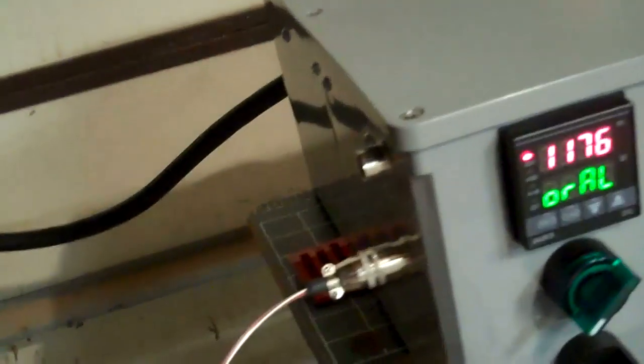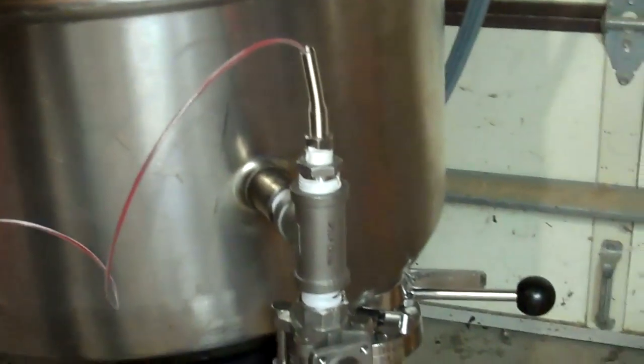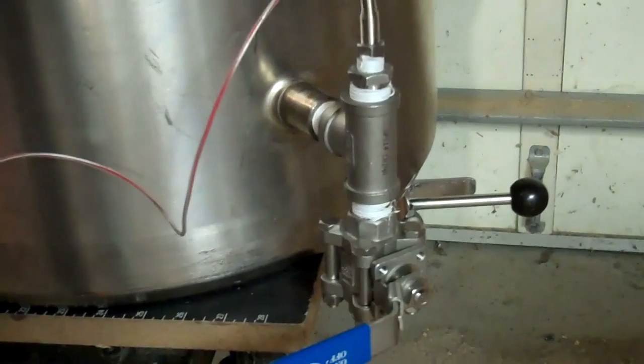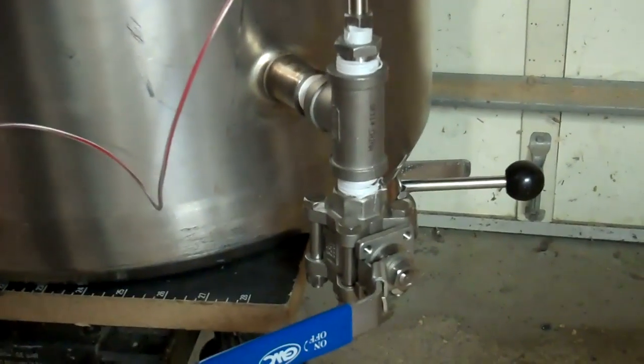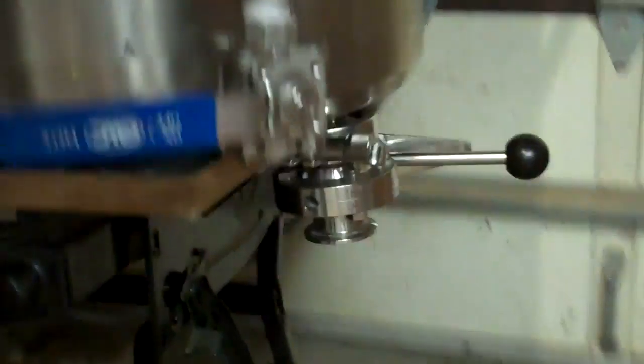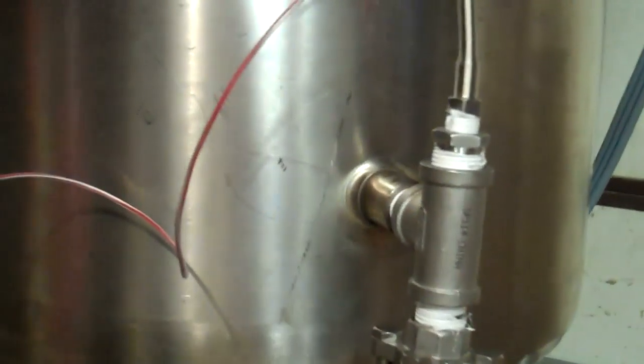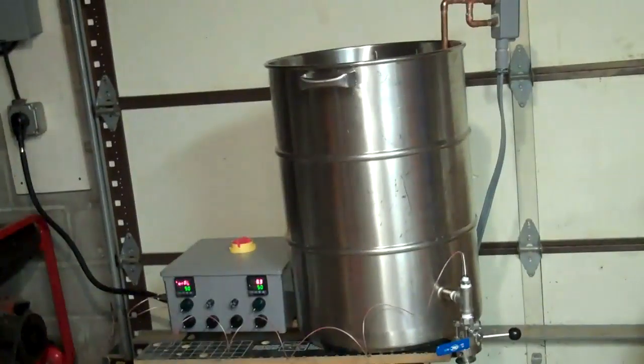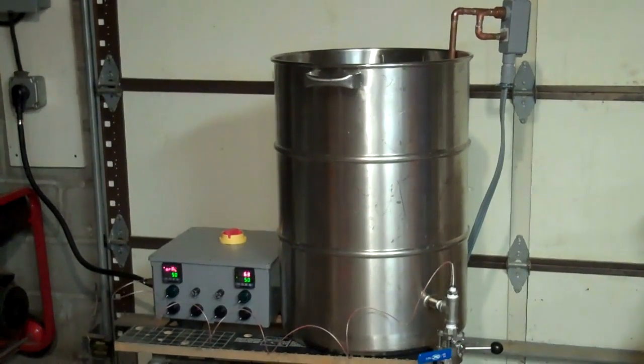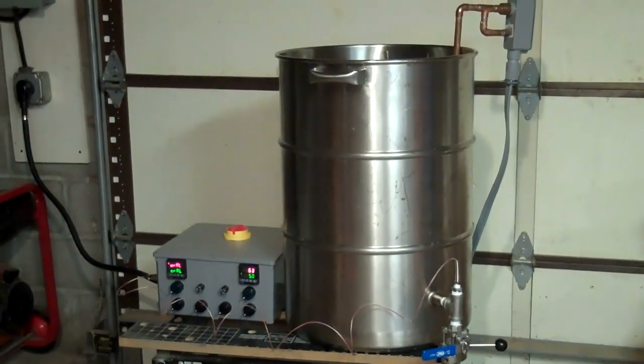This wire here goes to a quick connect for the temperature probe which is teed into the whirlpool port. So this is the main dump on the bottom, one inch full port butterfly, and this is going to be the recirculation port. Since I really only need to know the temperature of the boil during cooling, I figured that would be a fine place for it since I recirculate during cooling.